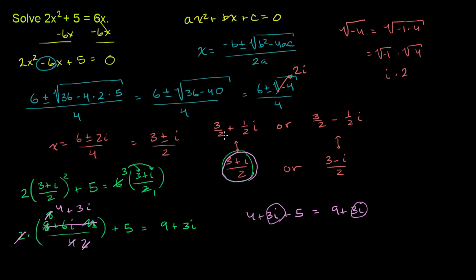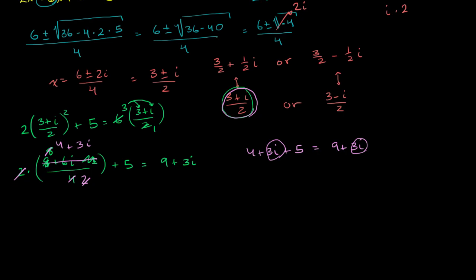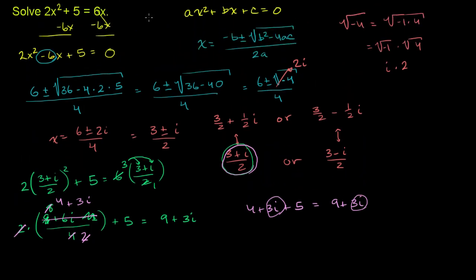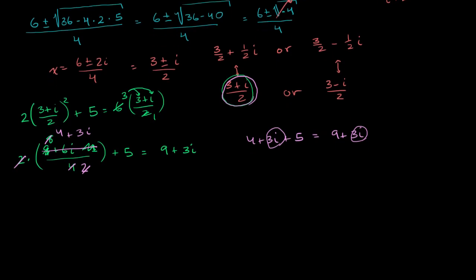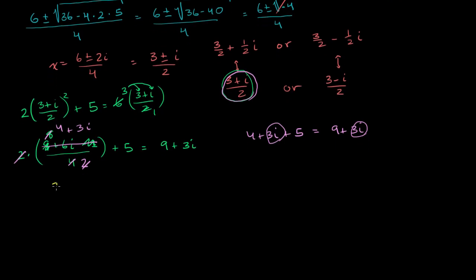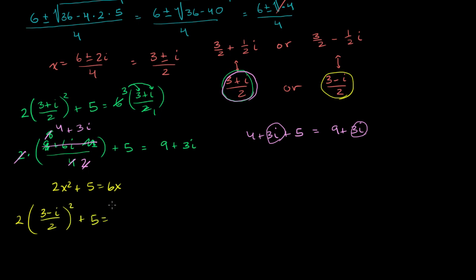Now let's try 3 minus i over 2. Looking at the original equation, 2x squared plus 5 equals 6x, we need to verify: 2 times 3 minus i over 2, squared, plus 5, equals 6 times 3 minus i over 2. It's a little hairy, but let's work through it.